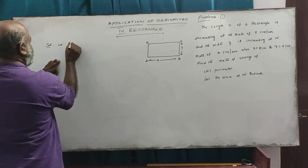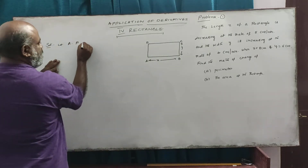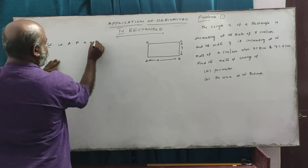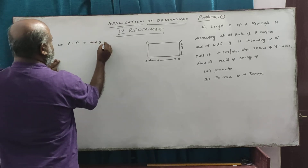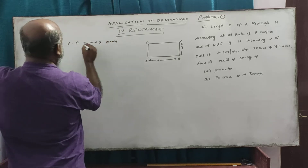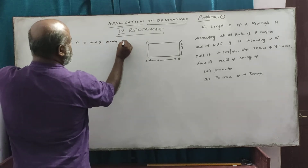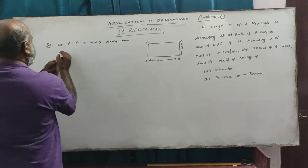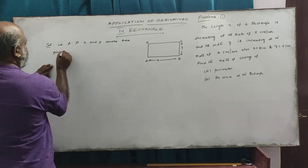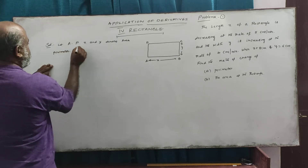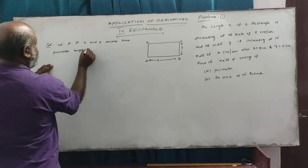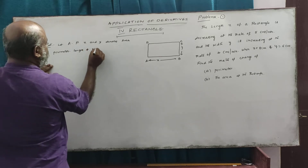Let A, P, x, and y denote the area, perimeter, length, and width of the rectangle respectively, in time t minutes.